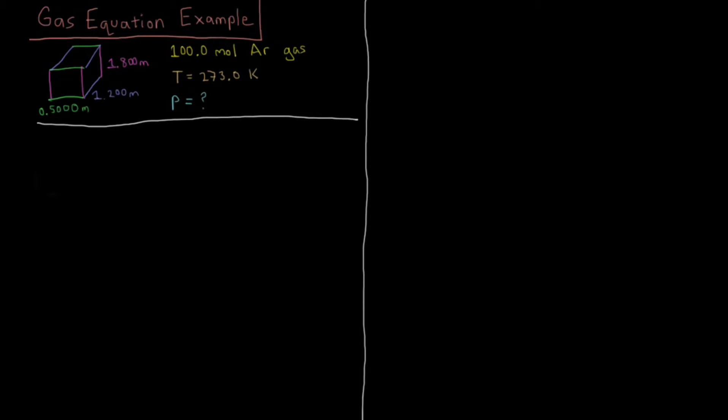Let's take our equations of state and apply them to a specific example to see what they predict for the pressure in this situation. We've got a rectangular prism here with sides 0.5 meters, 1.2 meters, and 1.8 meters.